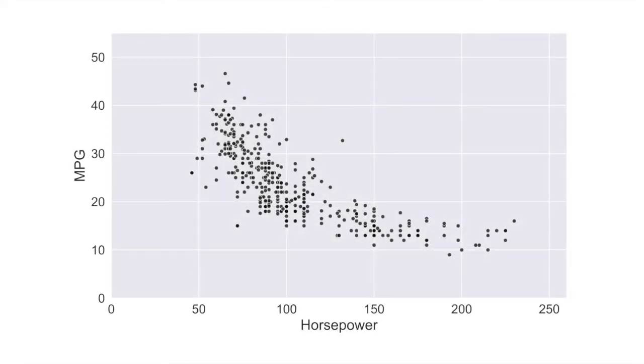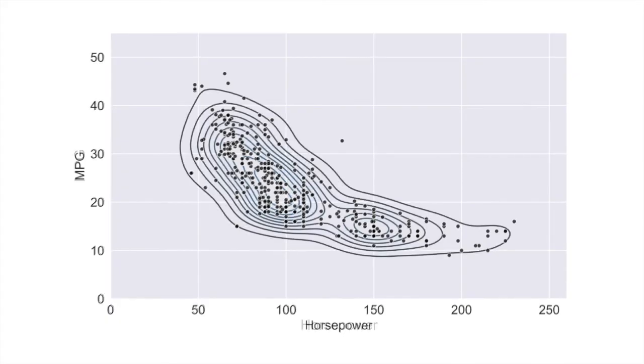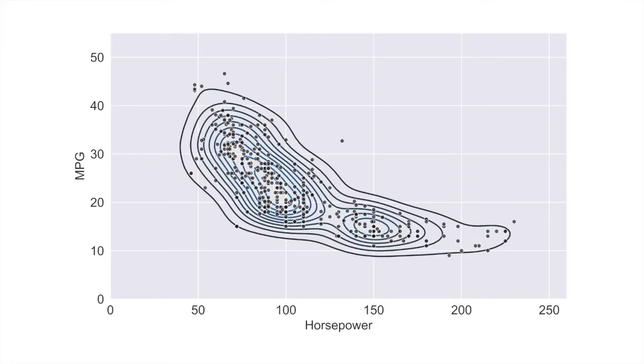Now that we've seen what Seaborn can do with one-dimensional data, let's switch over to Seaborn's other option: the bivariate KDE plot. In this case, we want to estimate the joint probability density function for these data in two dimensions. Seaborn's KDE plot allows you to create contours representing various different density levels of your data so that you can estimate that joint PDF. You can think about those rings as coming out of the page, with the highest density closer to you and the lowest density more toward the background.